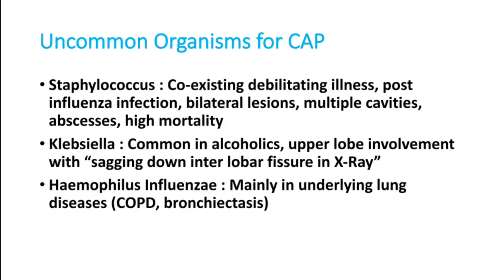Staphylococcus is an uncommon cause for community acquired pneumonia, but it can occur when a patient already has a lung lesion or preceding viral pneumonia. Post-chickenpox pneumonia and post-influenza secondary infection can be due to Staphylococcus. Bilateral lesions, multiple cavities, and multiple lung abscesses are very common in Staphylococcus pneumonia, and high mortality is a major concern.